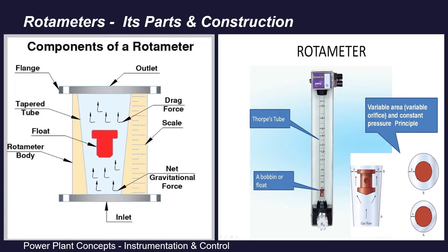Coming to its different elements, basically a rotameter has three main parts. First is a uniformly tapered flow tube. Second is a float that rises up or moves down depending upon the pressure exerted by the fluid entering the rotameter. Third is a measurement scale — a calibrated scale in which the float position is calibrated to display the corresponding volumetric flow rate reading.